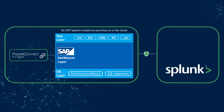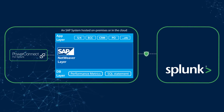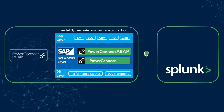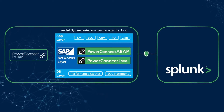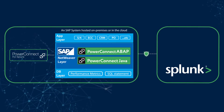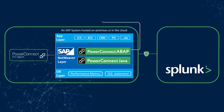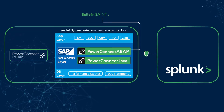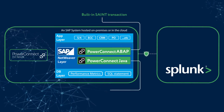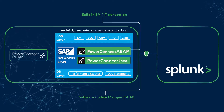PowerConnect has two versions of SAP-certified add-ons, one ABAP and one Java, that are imported into the NetWeaver layer of each type of SAP system to be monitored. The ABAP add-on is imported using the built-in SAINT transaction, and the Java add-on is imported via the Software Update Manager.